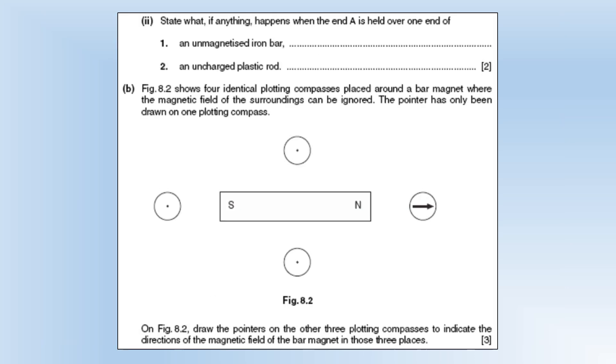State if anything what happens when the end A is held over one end of an unmagnetized iron bar. Well nothing is going to happen. It's a soft magnetic material. It's not a magnet. So when it comes into contact with iron nothing is going to happen because an iron bar doesn't have its own magnetic field. Uncharged plastic rod. Again nothing is going to happen. It's not magnetic.